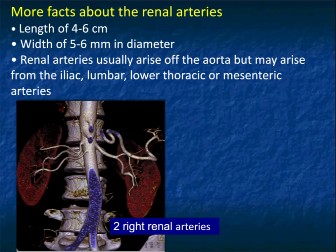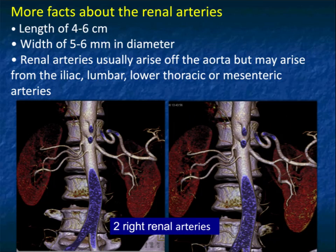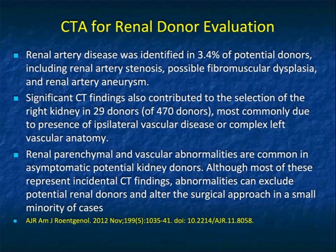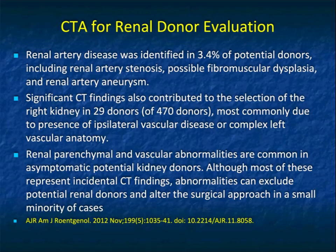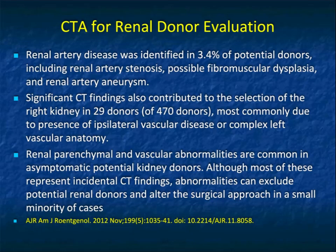Renal arteries are 4 to 6 centimeters in length and about 5 millimeters in diameter. In one example, the patient has two right renal arteries and a single left renal artery, and the uppermost right vessel has pre-hilar branching — making the simple choice to remove the patient's left kidney. In terms of renal donor evaluation, we see renal artery disease in about 3% of potential donors. Now we not uncommonly see donors over 50 and even over 60, so FMD or renal artery stenosis is seen more frequently. Complex left vascular anatomy or minimal scarring on the right often determines kidney selection.